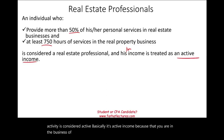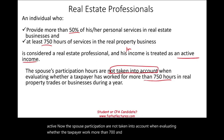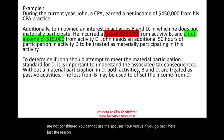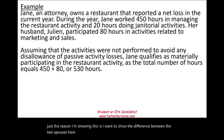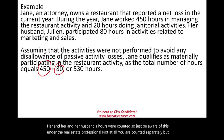The spouse's participation is not taken into account when evaluating whether the taxpayer worked more than 750 hours. Just be aware of this — under the real estate professional exception, you cannot use the spouse's hours. This contrasts with the Jane example earlier, where her and her husband's hours were combined for material participation purposes.